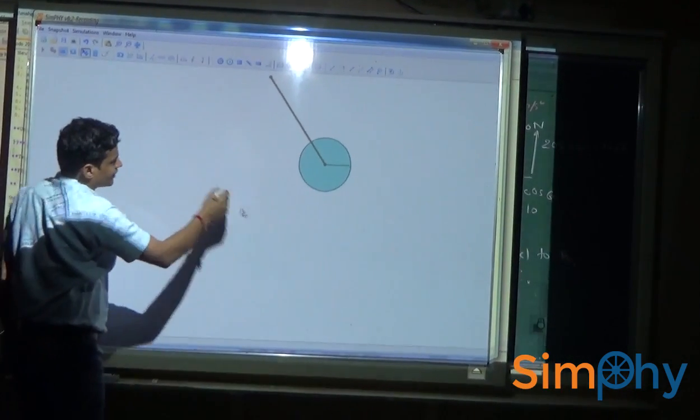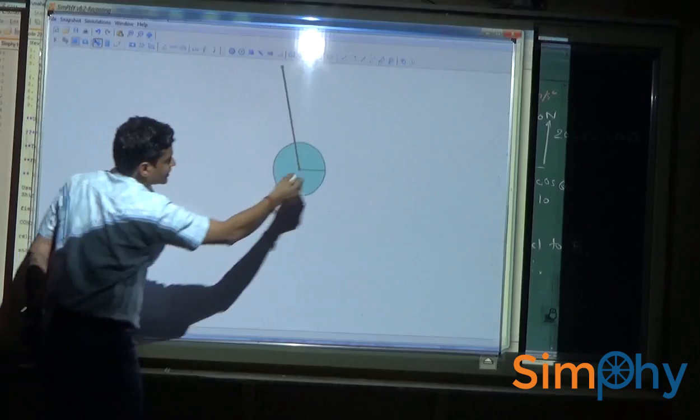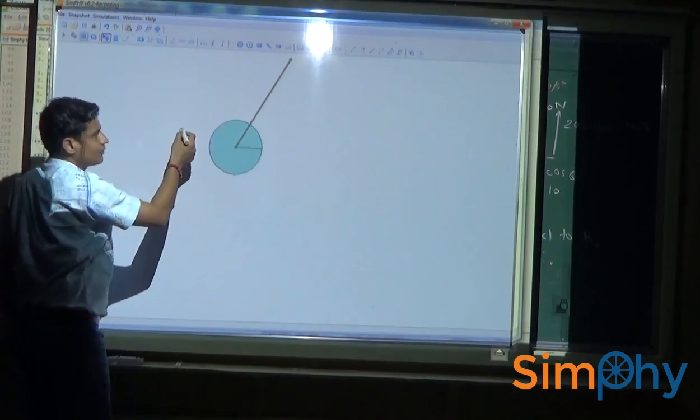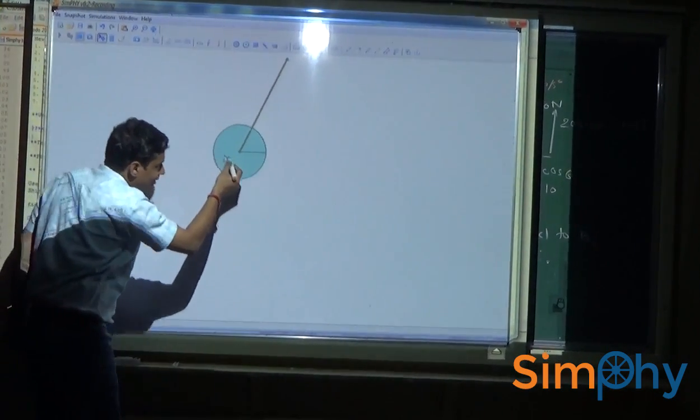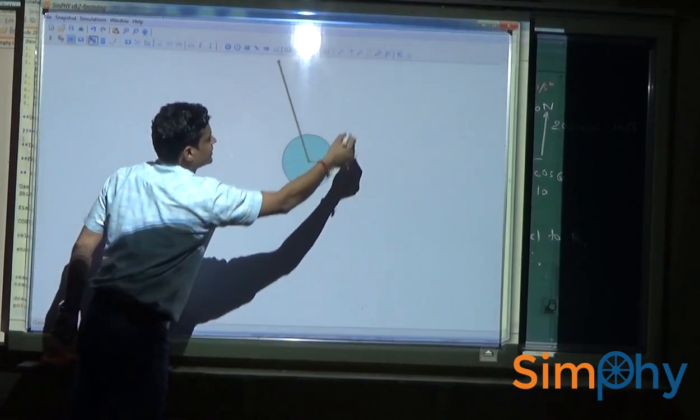Now you can see the disk is moving in a circular path and the velocity of disk is increasing then it is decreasing.